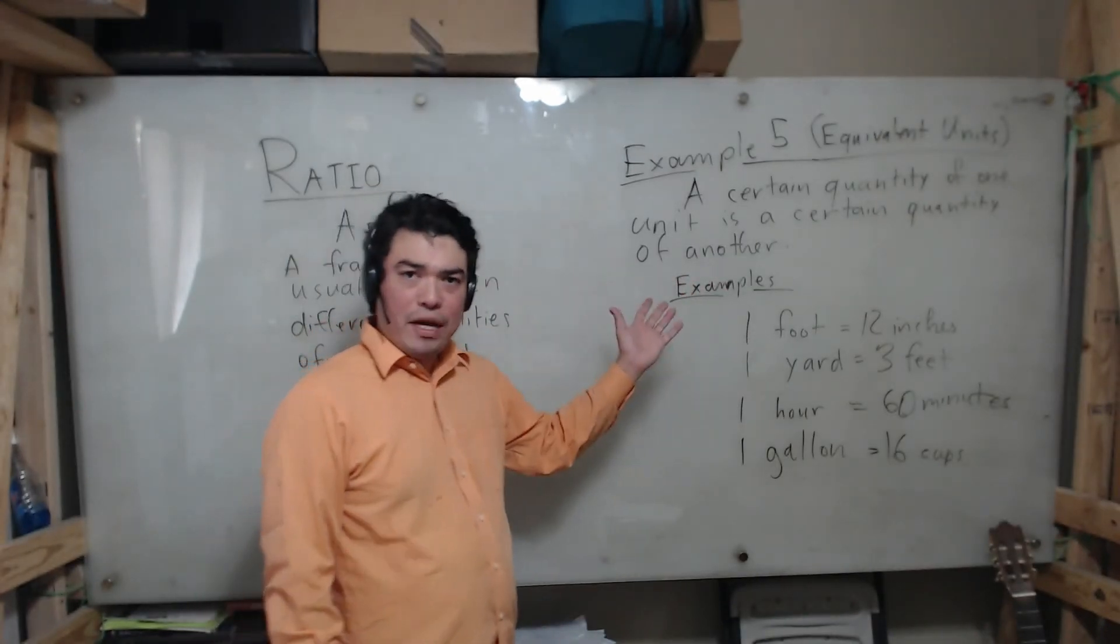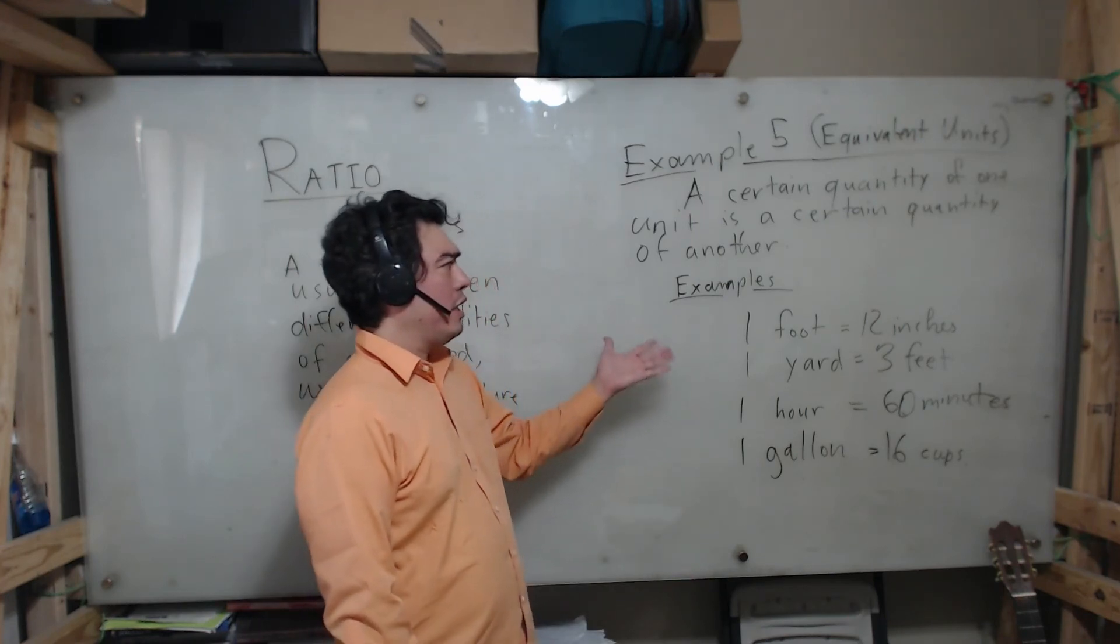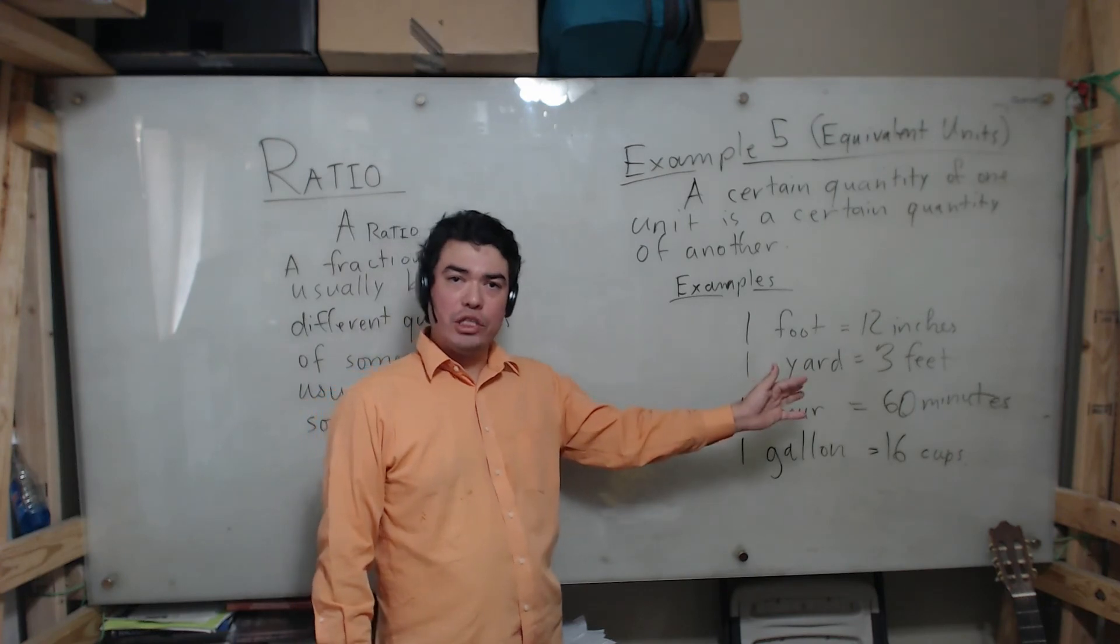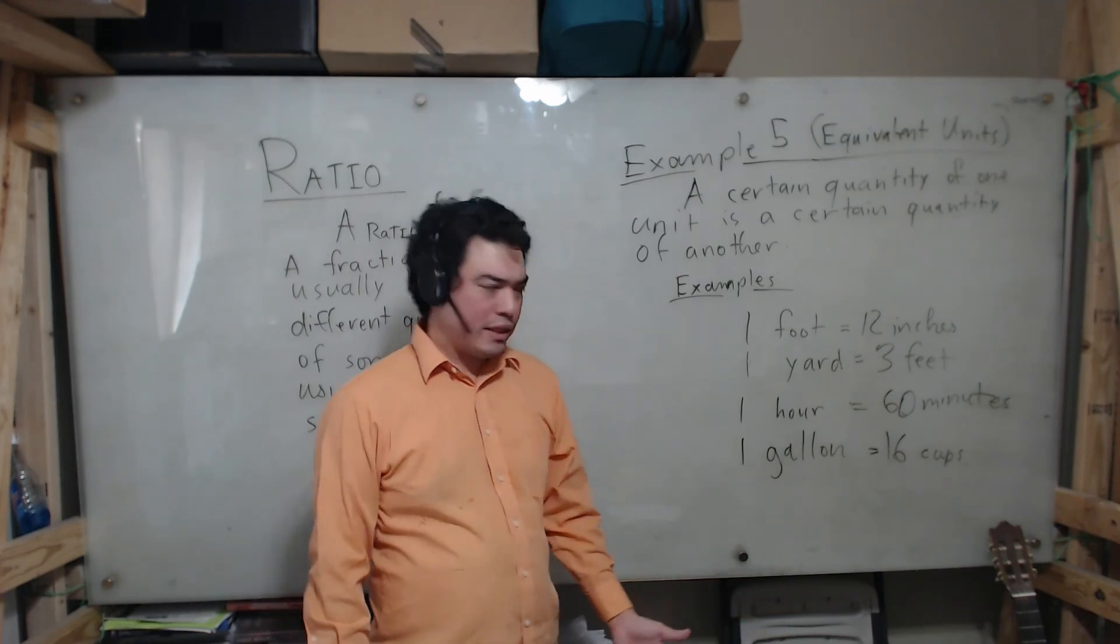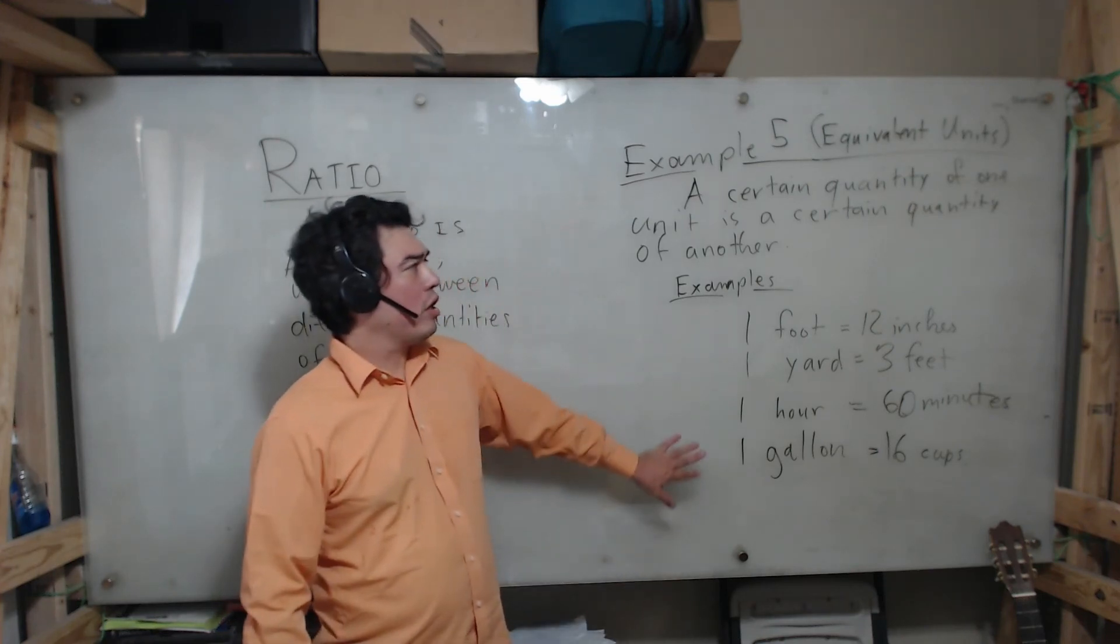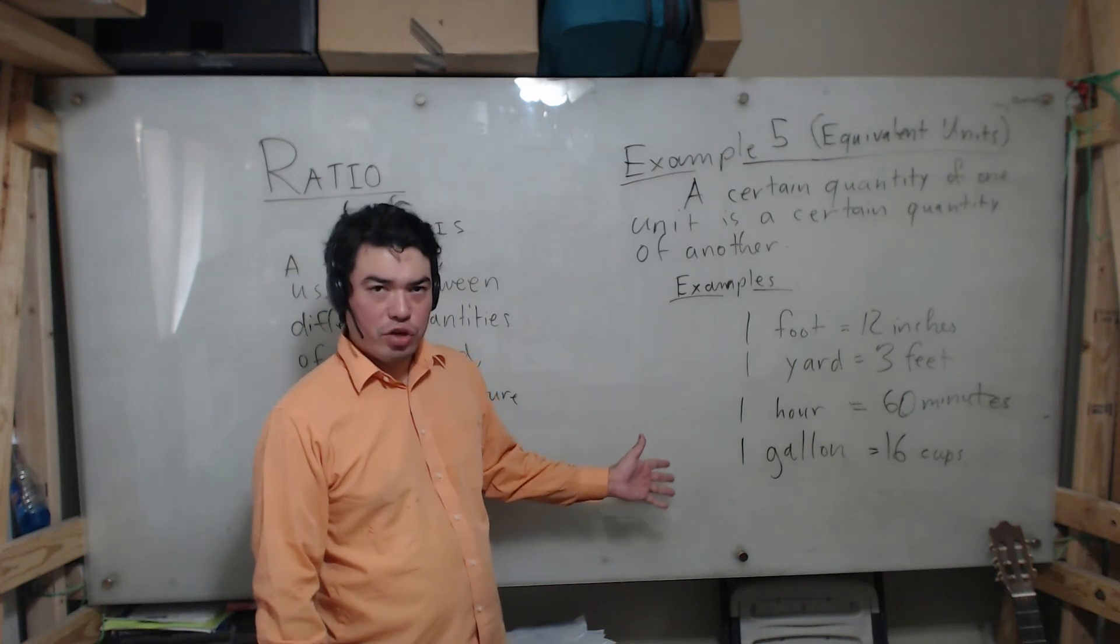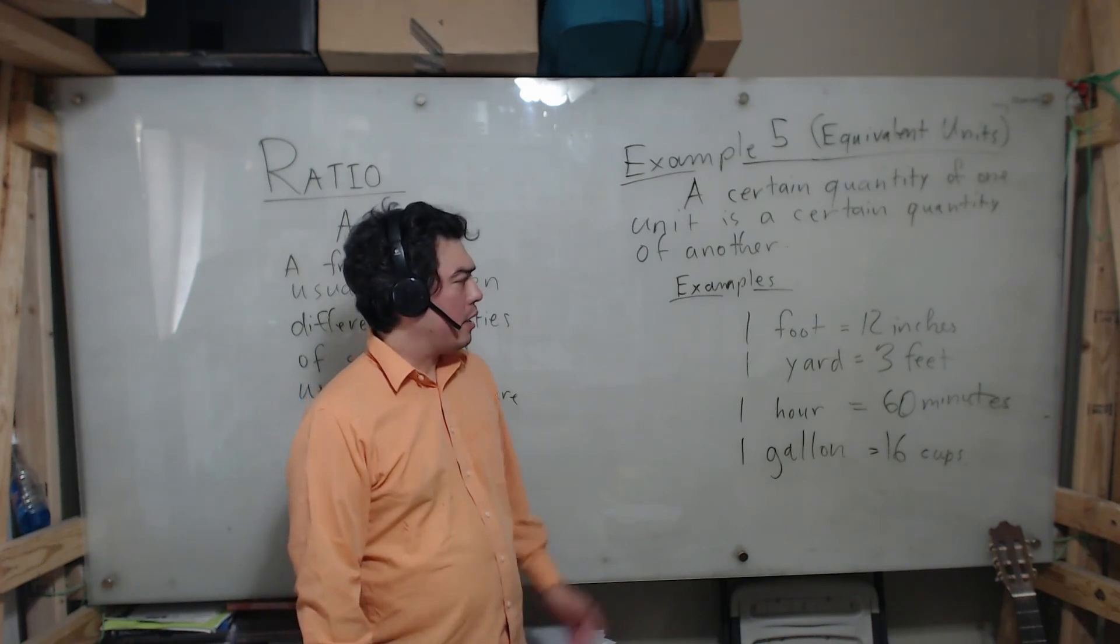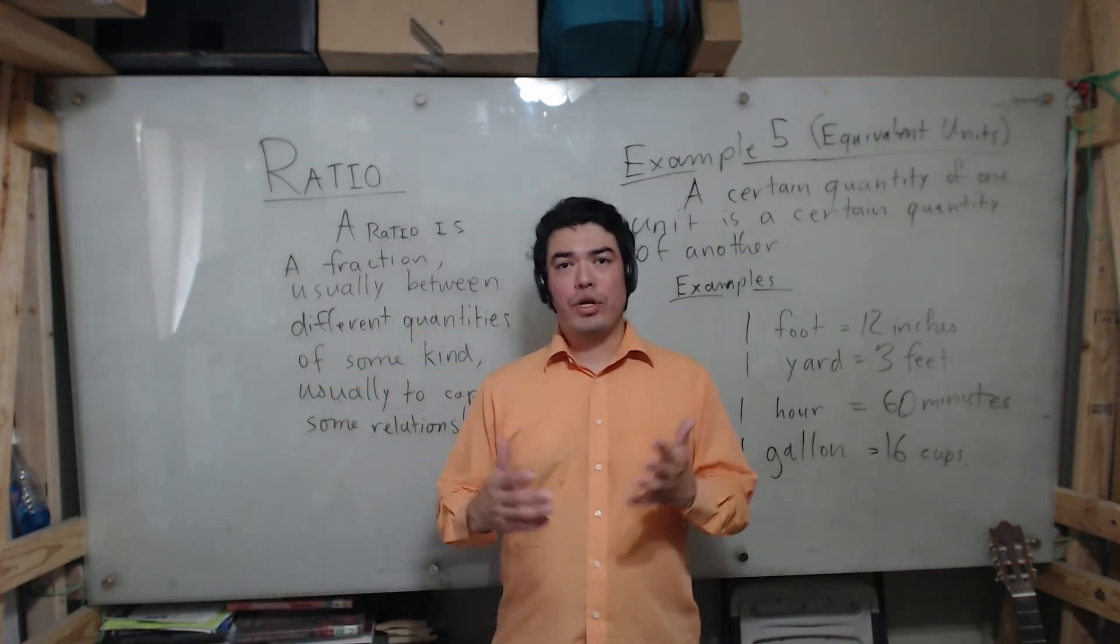Now in example five we're going to talk about equivalent units. A certain quantity of one unit is a certain quantity of another unit. For example, one foot is 12 inches, one yard is 3 feet, one hour is 60 minutes, a minute is 60 seconds, a gallon is 16 cups and so on. We're going to learn how to convert between units, but yes, this is another kind of ratio that we see in our daily lives. This will be our list of examples for ratios. Soon we're going to be solving problems involving ratios and we're going to get to that soon. I hope you're excited!